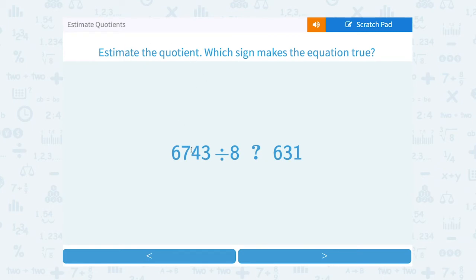Estimate the quotient. We have 6,743 divided by 8, and we want to compare that to 631. So again, I want to pick a number that's close to this 6,793 that's going to be much easier to work with.